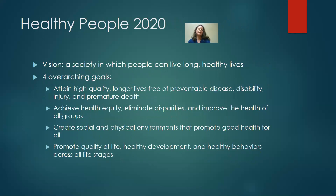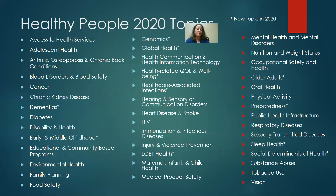For 2020, the vision is a society in which people can live long, healthy lives, and there are four overarching goals. The topics range from particular diseases like diabetes to population groups like older adults and people who identify as LGBTQ. There's also maternal and child health, and health-related quality of life and wellbeing is a new topic in 2020. Within each of these topics there are a set of measurable objectives with targets we are trying to reach by 2020.